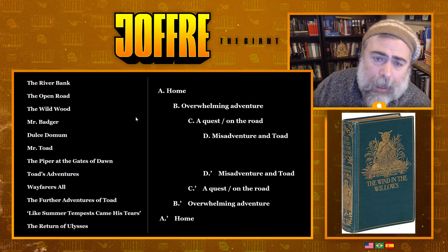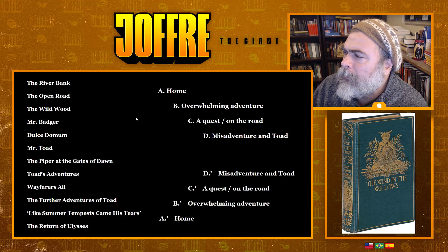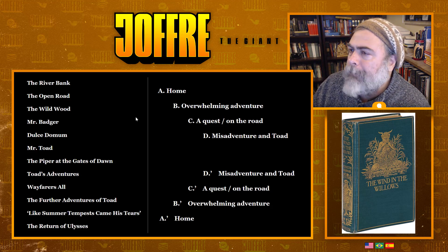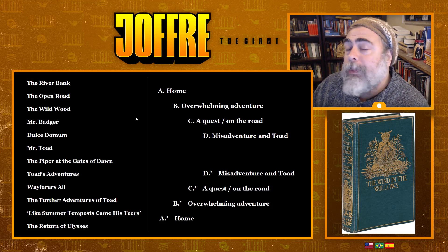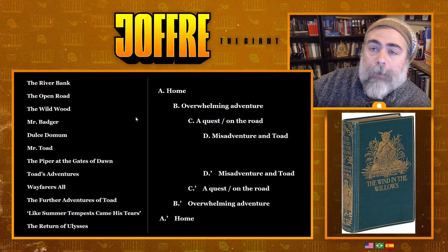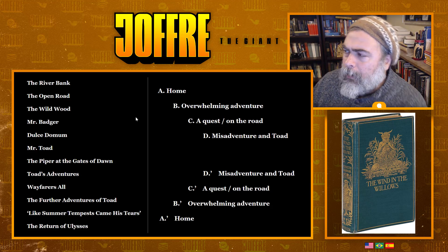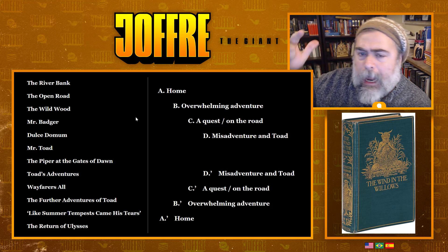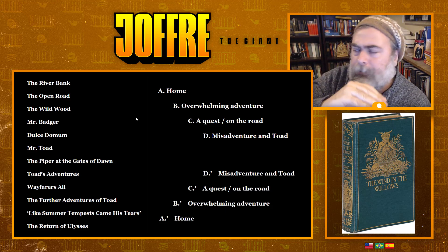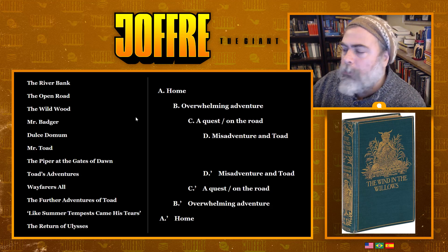What I mean by chiasm is that we have parallels — parallels that ripple out. The theme at the beginning of the book is home, and the theme at the end of the book is home. The next theme is overwhelming adventure — adventure that is just too much — just before the home part at the end as well. So you can see it all bundles in, which is why I've given it this shape and called them things like A, A prime, B, B prime. The structure is: home, overwhelming adventure, a quest or being on the road, misadventure and Toad — and then again: misadventure and Toad, a quest on the road, overwhelming adventure, and home.